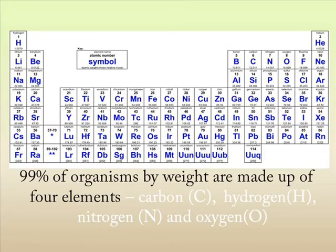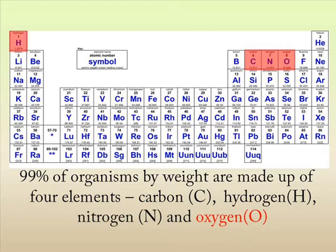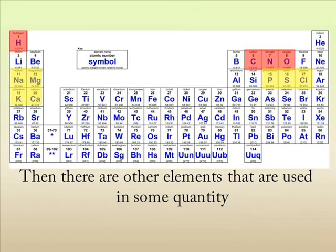Over 99% of all organisms, their weight is made up of mainly four elements: carbon, hydrogen, nitrogen and oxygen. Now there's a couple of other minerals that are also important, such as sodium and chlorine, and these are used in some quantity.